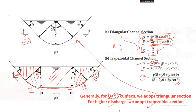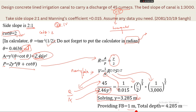Looking at the figure, the freeboard is the additional height above the water surface. We take freeboard as 1 meter, so the total depth = 3.285 + 1 = 4.285 meters. That's all for now, thank you for watching.